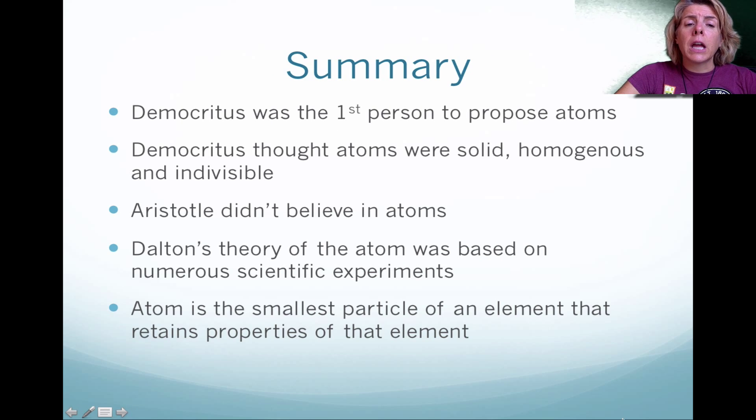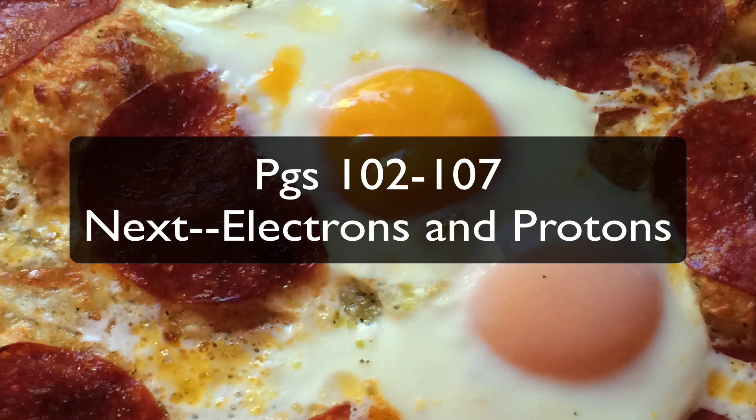In summary, Democritus was the first person to propose atoms, and he believed they were solid, homogeneous, and indivisible. Aristotle, unfortunately, did not buy into that debate and thought that fire, water, earth, and air were the four bases of matter. Luckily, Dalton came along 2,000 years later and revived Democritus's idea about the atom, coming up with those postulates based on his experiments. Lastly, the atom is the smallest particle of an element and retains the element's properties. We'll obviously talk about smaller bits of matter, but for now, we just want to look at the atom. Thank you.